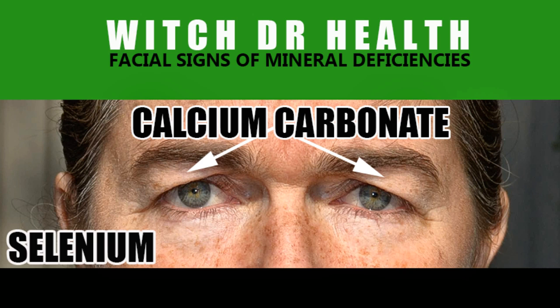When it comes to selenium — and this is going to be very important to people with thyroid disorders — we have to look at the indents at the sides of the bridge of the nose, right at the inside corners of the eyes. In this photo you'll see very deep concave indents on each side, as if somebody poked it with a round object and the indent stayed at the sides of the nose. This is a selenium deficiency.